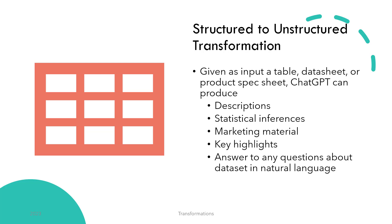As a basic example, you can provide a datasheet of a product — say a car — as input, and then ask it to generate a description for a marketing campaign for that car. You're giving JADGPT a structured input, that is a datasheet or table, and it is able to generate an audience-specific description — an unstructured output — with ease.